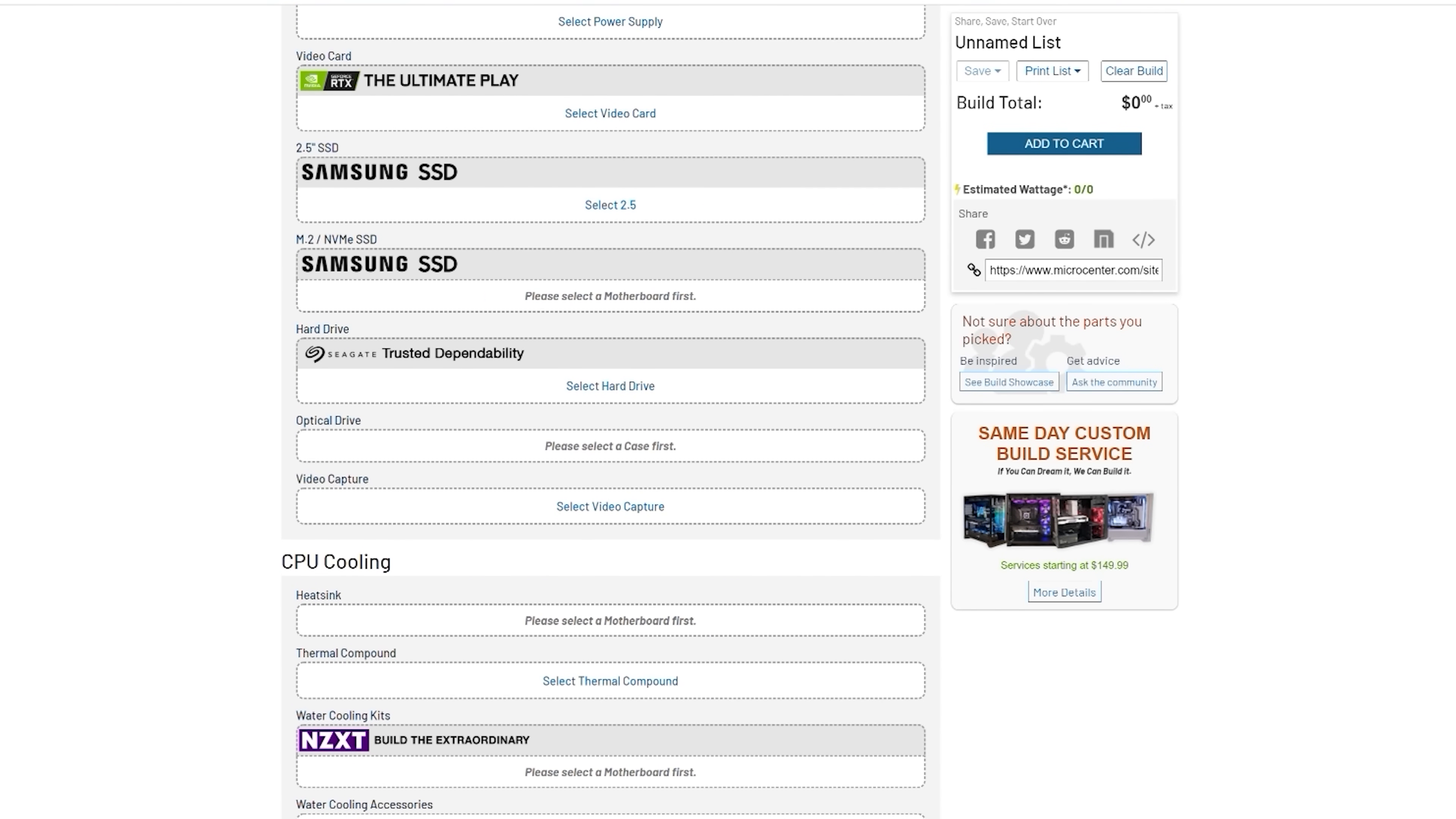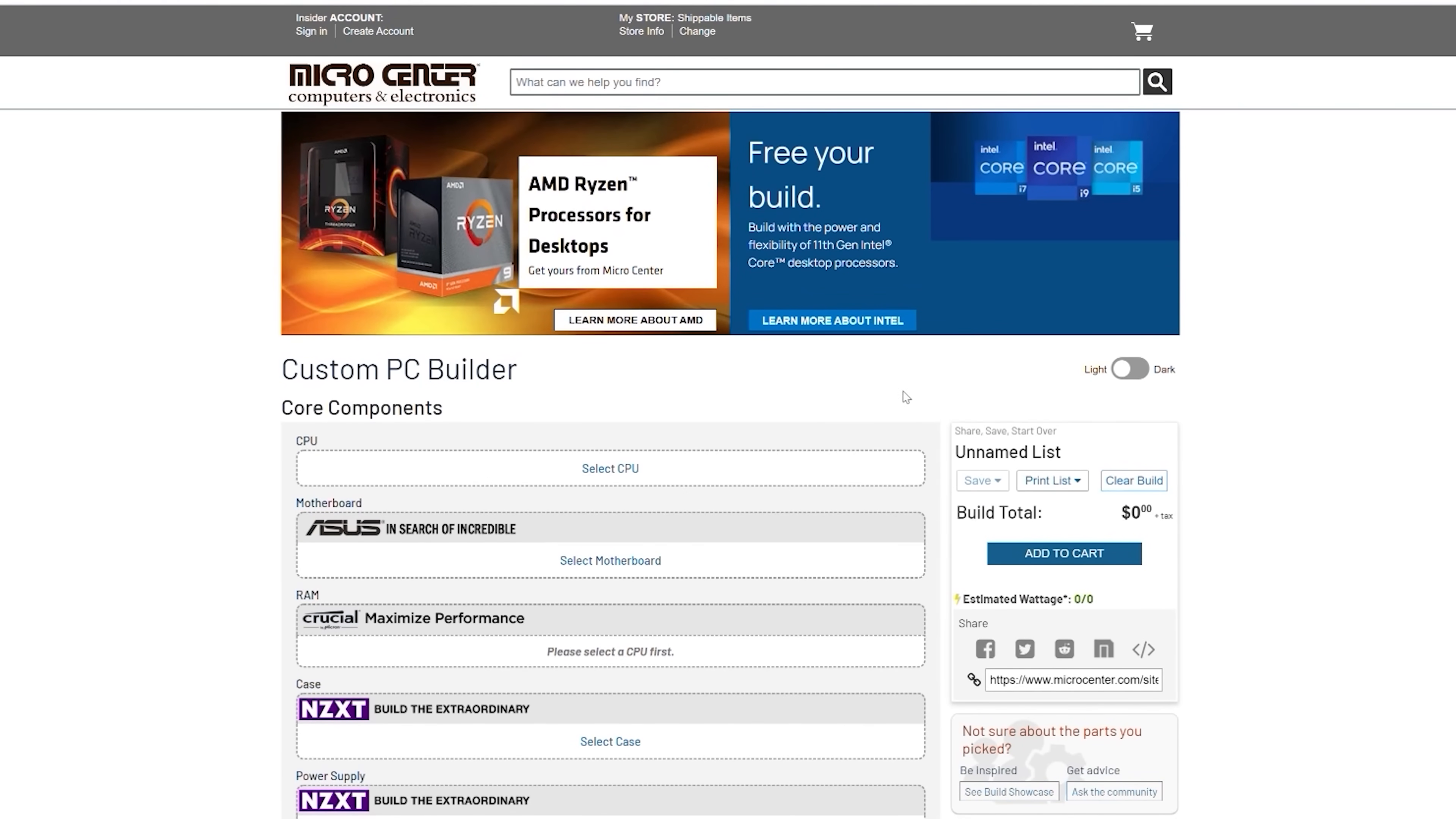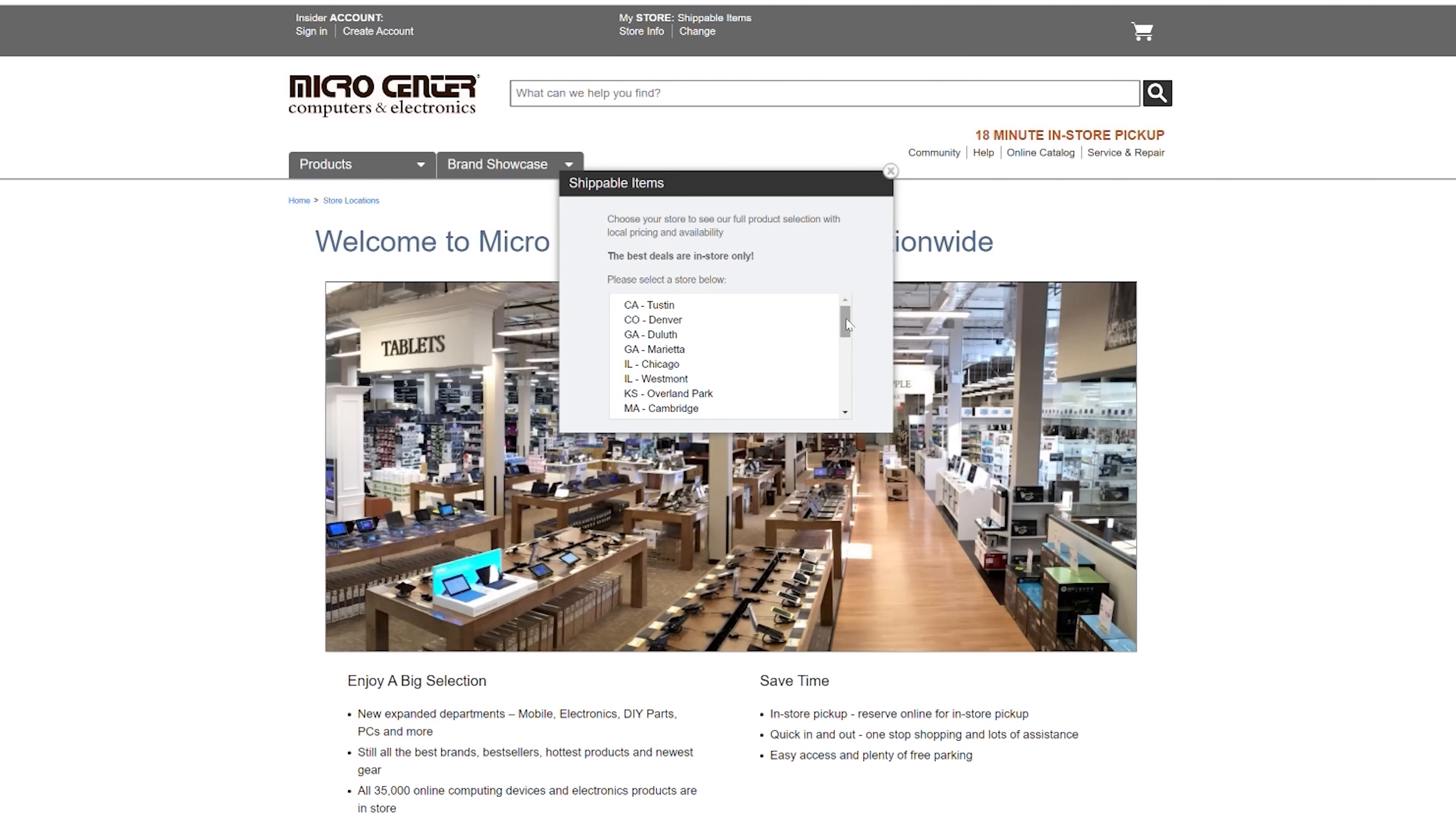And if you're a little bit nervous to assemble it, you can just check the box marked same day pro assembly and an expert will assemble your PC for you. This is really nice because it gives you the benefit of having a custom PC, but also lets you know that it's going to work in the end. You can check them out online or even go to one of their 25 locations across the US.